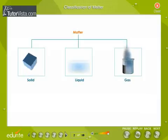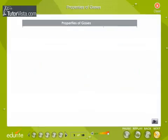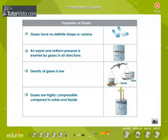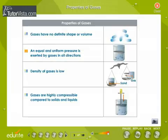Matter can be interconverted from one state to another. Properties of gases: As we know, gases lack definite shape and volume. Gas molecules exert equal and uniform pressure in all directions. Therefore, the density of gases is lower than solids or liquids. The number of molecules present per unit volume is very small compared to solids and liquids.